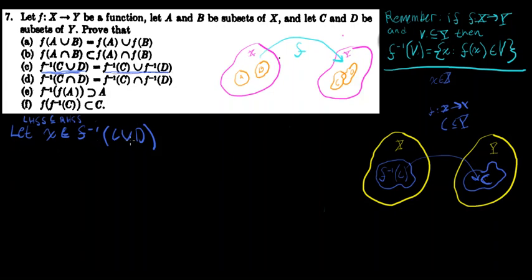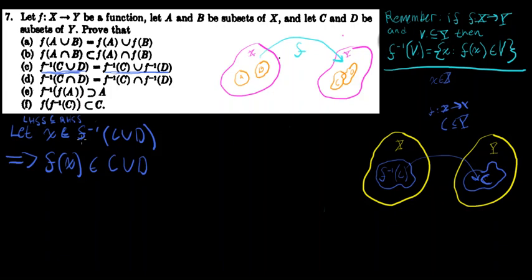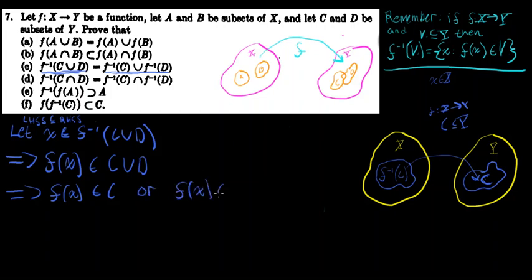If x is in the inverse image of C union D under F, then by our definition, F(x) — the image of x under F — must be in C union D. Because if x is in the inverse image of C union D, then x is in the set of elements in X that are mapped by F to C union D. So F(x) is in C union D, and that implies, by the definition of set union, that F(x) is in C or F(x) is in D.